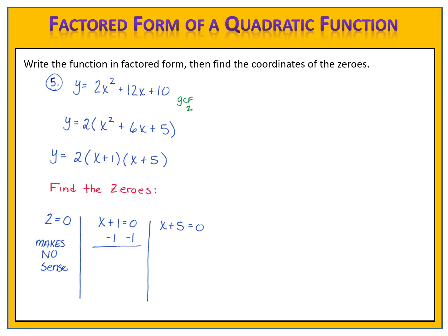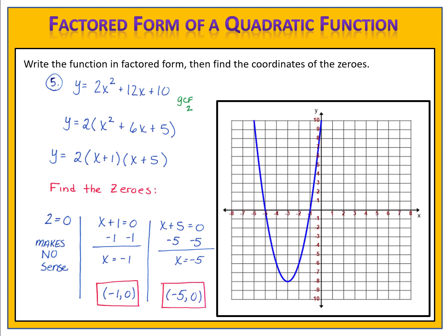From x plus 1 equals 0 we get x equals negative 1, and from x plus 5 equals 0 we get x equals negative 5. That gives us our two zeros at negative 1 comma 0 and negative 5 comma 0. Looking at the graph, we can see that's exactly where the parabola passes through the x-axis — those two points are the x-intercepts.